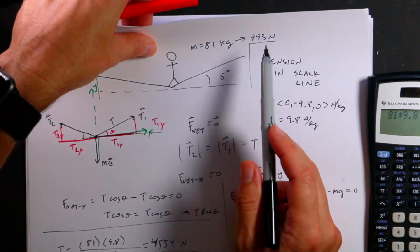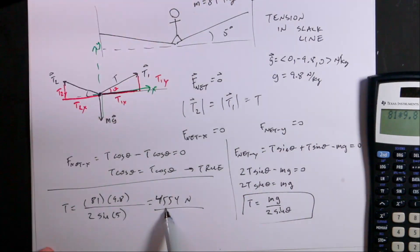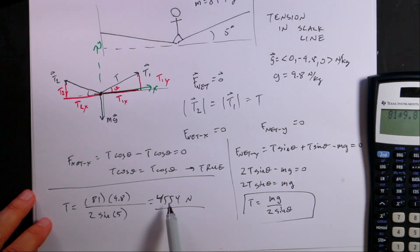An 81 kilogram person has a weight, a gravitational force of 793. So the tension in the line is not the weight of the person. It's much higher than that.